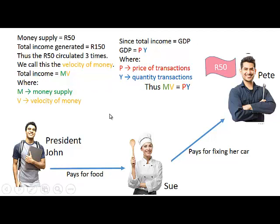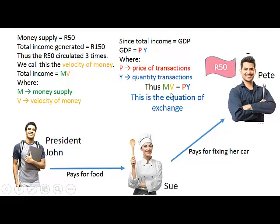Therefore we can say that MV, which was equal to total income, is equal to PY, which is also equal to total income. And this we call the equation of exchange: money supply times velocity is equal to the price of transactions times the number of transactions.